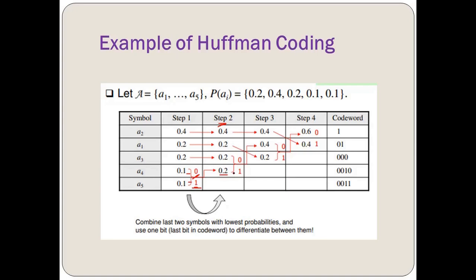Next, the two lowest probabilities in the updated list are 0.2 and 0.2. We add these to get 0.4, and place 0.4 after the existing 0.4 (A2) since it is not placed before already-listed nodes of equal probability — so this new 0.4 node comes after A2. Again, the upper branch is labeled 0 and the lower branch is labeled 1.